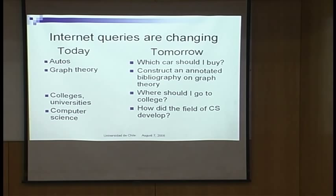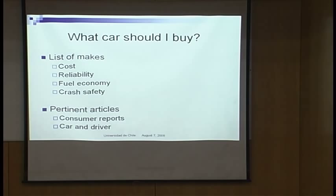If you ask 'where should I go to college?', the computer will ask what things are important to you — cost, geographical location, size — and return a ranking of programs with student-faculty ratios. It might even find a list of graduates from your high school who went to a specific college, with email addresses so you can contact them. If you ask 'what car should I buy?', it will develop a list based on criteria like cost, reliability, fuel economy, and crash safety, and return a ranked table of cars with pertinent articles from sources like Consumer Reports and Car and Driver.